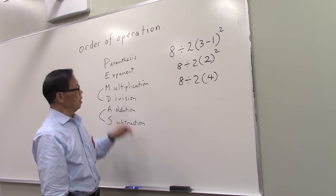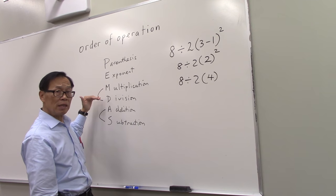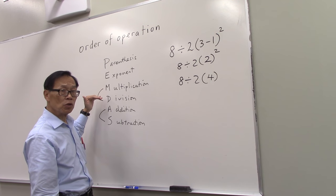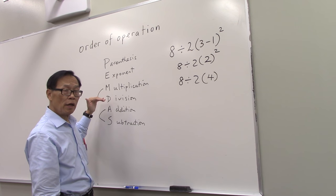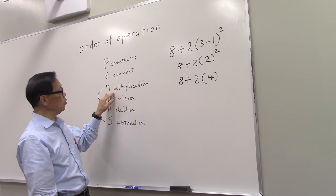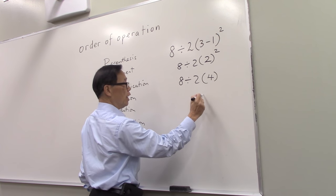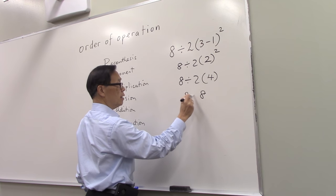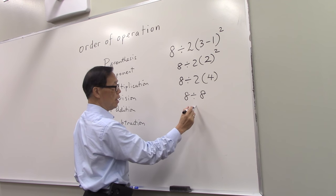Now, by this scheme, the order that most students learn in elementary school, we will do the multiplication. That will give you 8. And 8, then, division. 8 divided by 8 is 1.